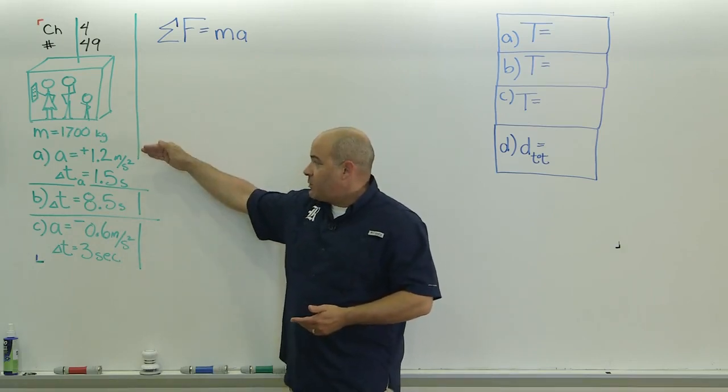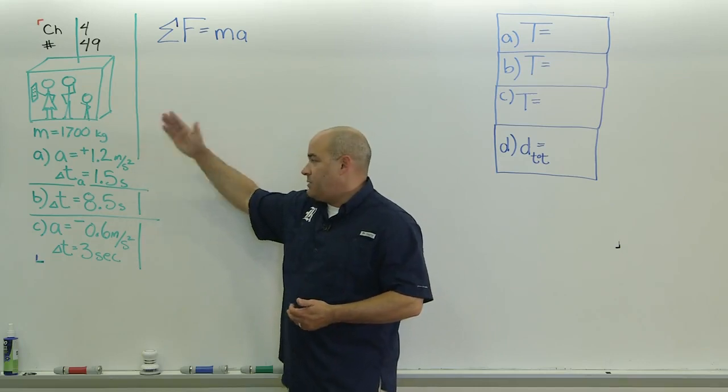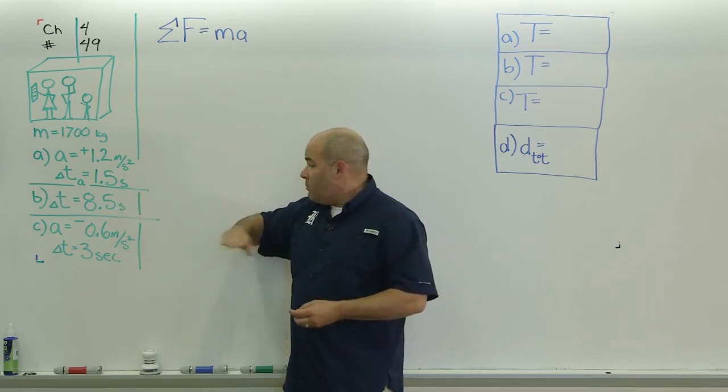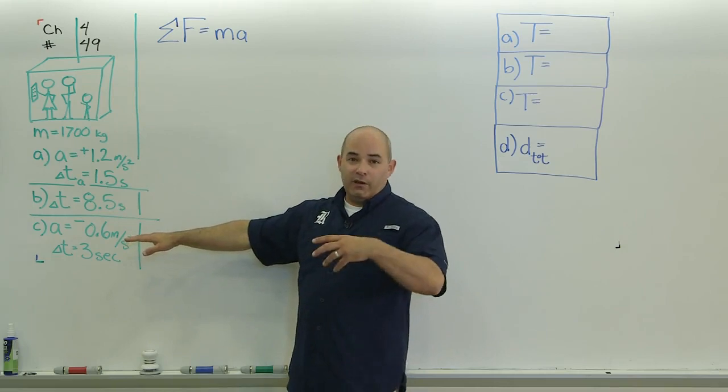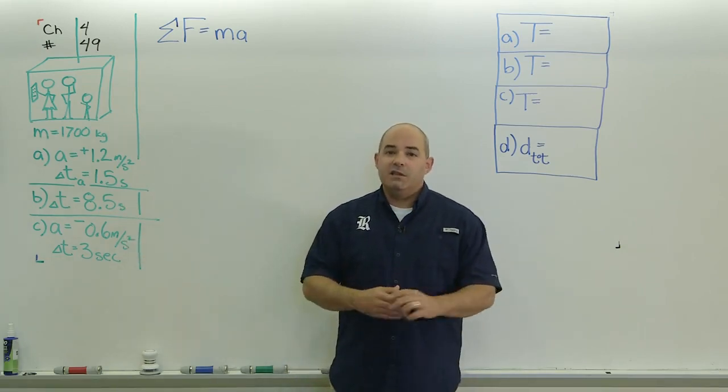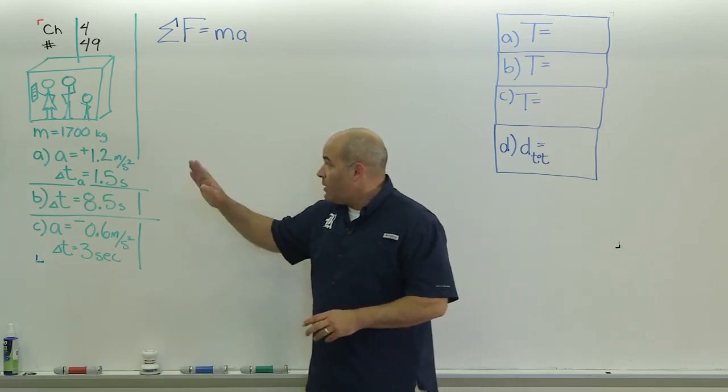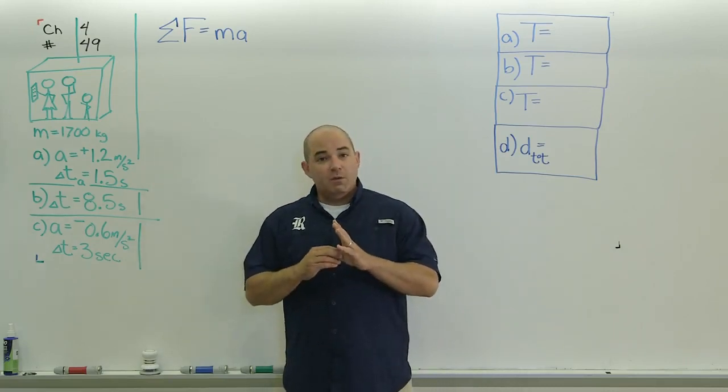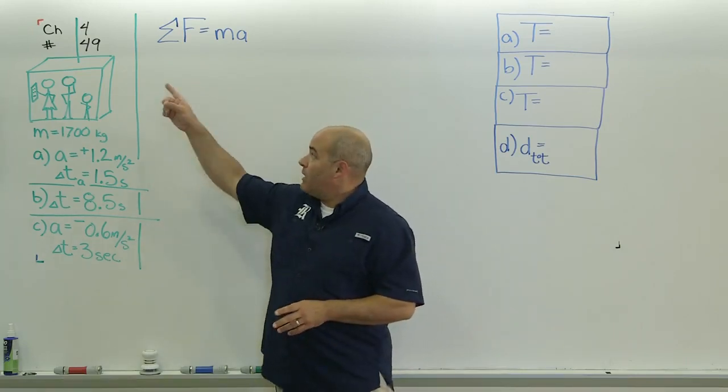It tells us the mass of the elevator. In part A, it's accelerating upwards for 1.5 seconds. In part B, it's moving at a constant velocity. In part C, it's decelerating for 3 seconds. And in part D, they wanted us to find the total distance that it had traveled. So, for part A, the first thing we needed to find was the tension in that cable.